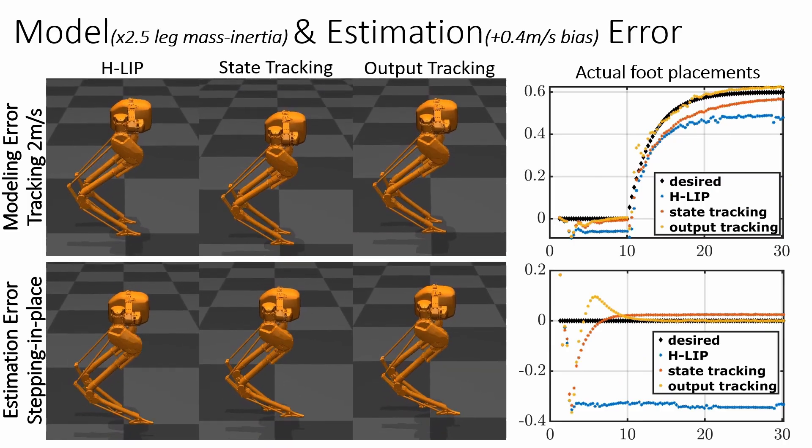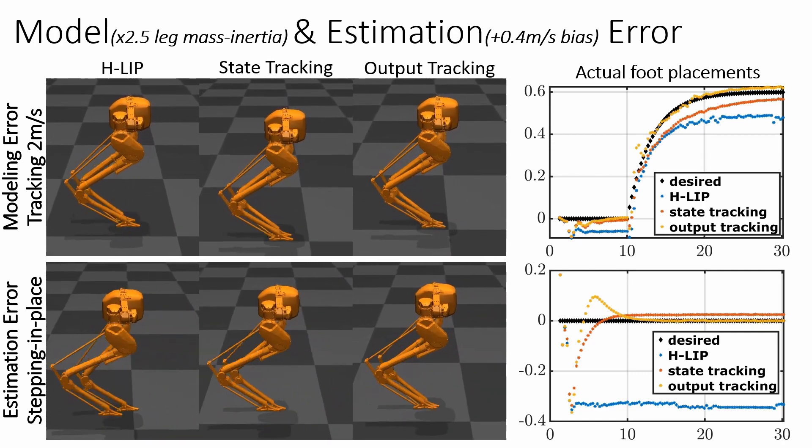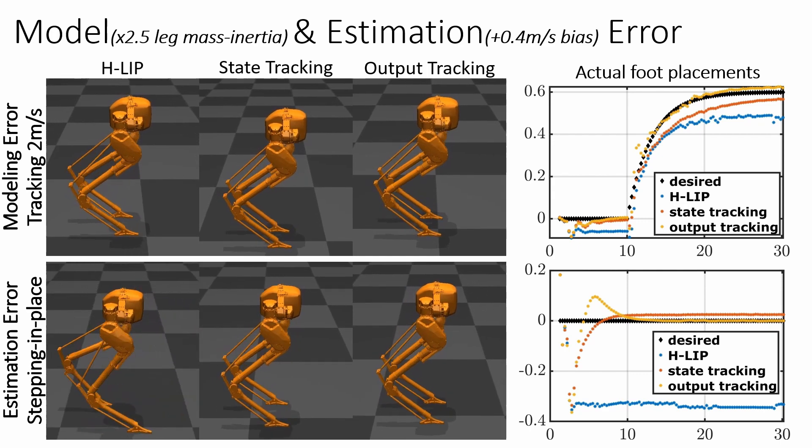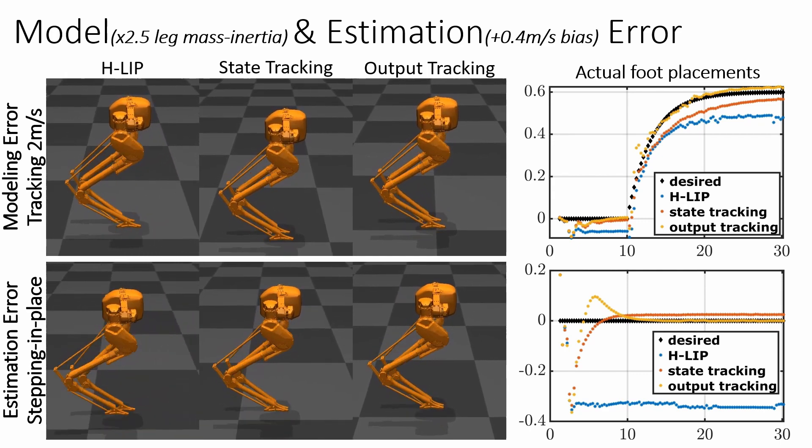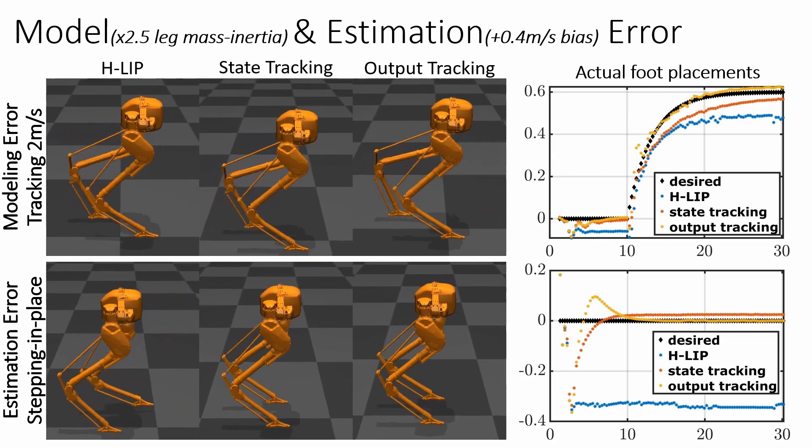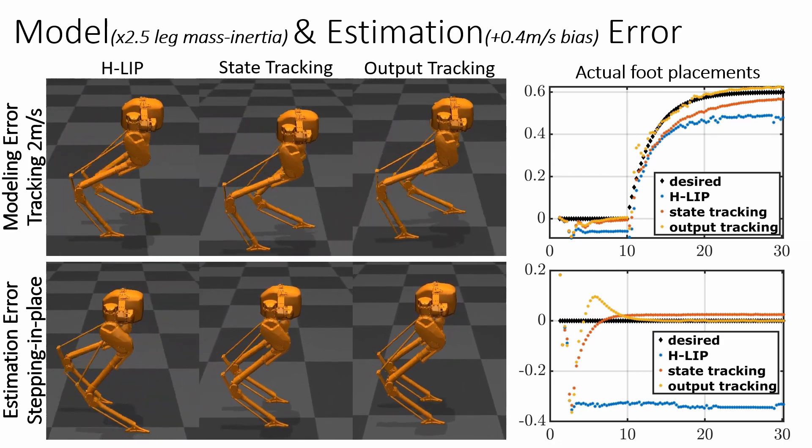We present the results for a modified robot model with 2.5 times of the nominal leg mass inertia property and with a biased 0.4 m per second velocity estimation error. The output tracking here represents a slightly different formulation that incorporates low-level tracking error into the adaptation scheme.